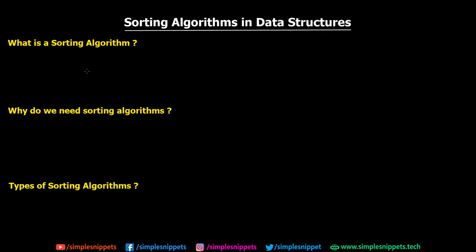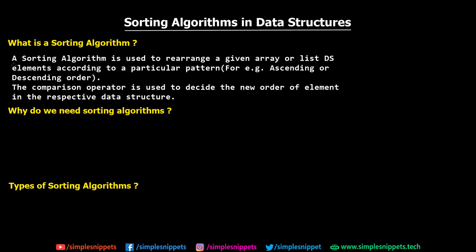What is a sorting algorithm? A sorting algorithm is used to rearrange a given array or list data structure to a particular pattern. It rearranges the elements inside a list or array into a particular pattern — for example, ascending or descending order for integer elements. The comparison operator, such as less than or greater than, is used to decide the new order of elements in the respective data structure.